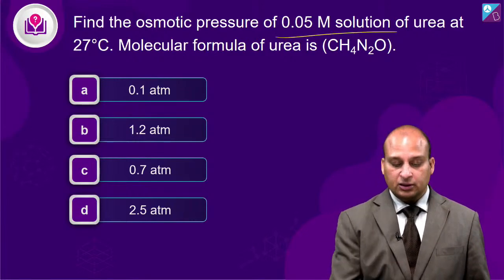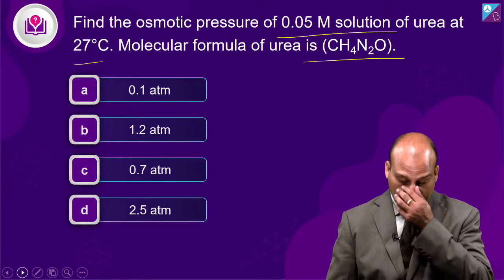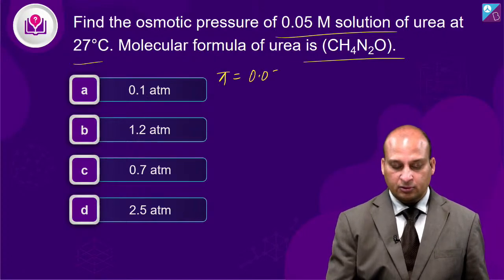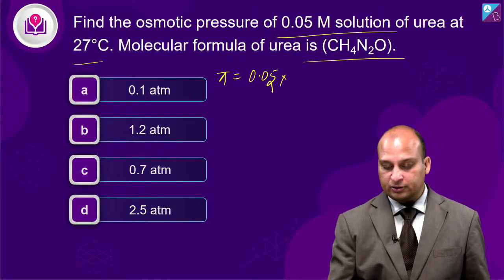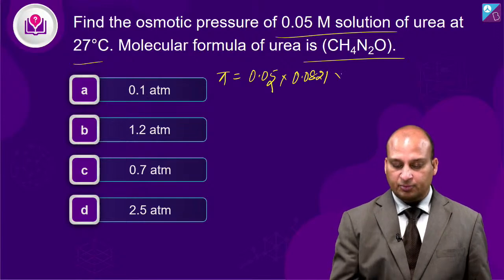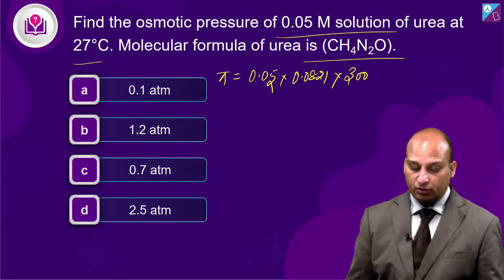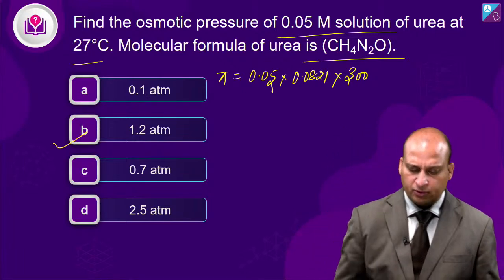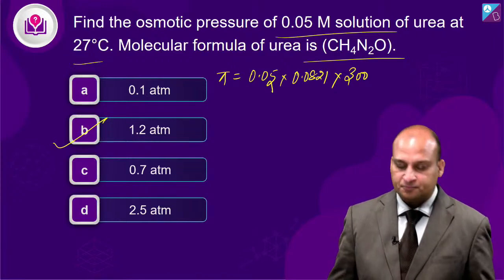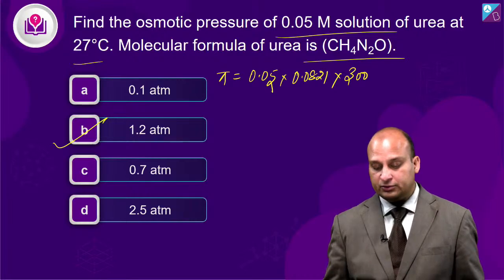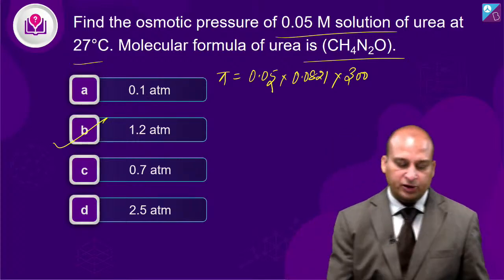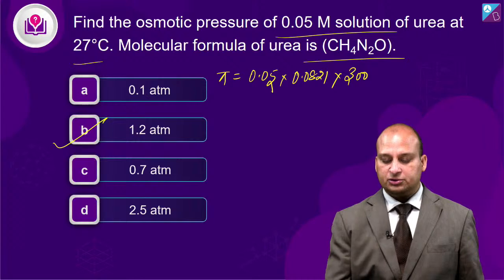Find the osmotic pressure of a 0.05 M urea solution at 300 K. π = CRT = 0.05 × 0.0821 × 300. Calculating: 0.05 × 0.0821 = 0.004105; × 300 ≈ 1.2 atmosphere. Answer B is correct. These are very simple, straight questions that can be asked in both JEE and NEET.